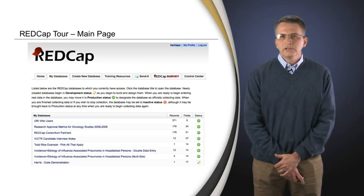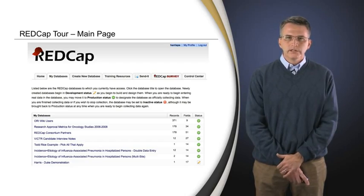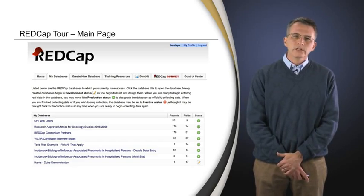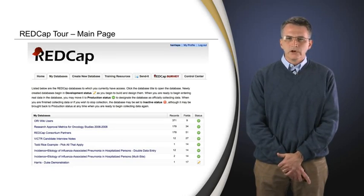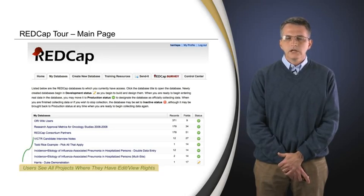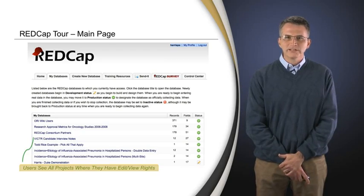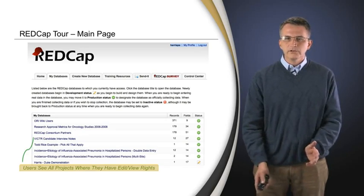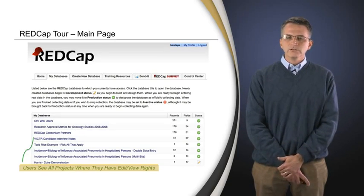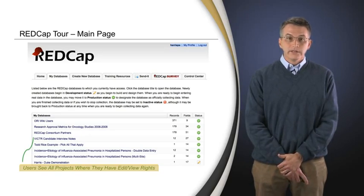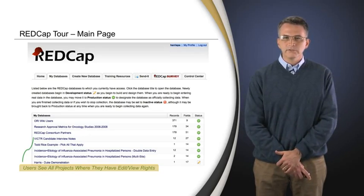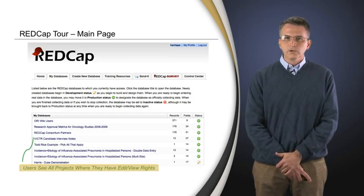When an individual logs into a REDCap system, whether that be at Vanderbilt, Mayo Clinic, or anywhere else in the world using it, they're going to see their projects. Being able to see all my projects at a glance, and having users only see the projects that they should be seeing — REDCap might be supporting 500 projects across the enterprise, but if you as an individual should only see three, then you should only see three. Being able to sequester project information based on users is an important concept.